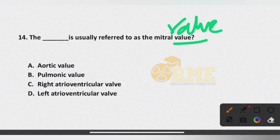Question number 14 involves identifying heart valves. The options include aortic valve, pulmonic valve, right atrioventricular valve, and left atrioventricular valve.